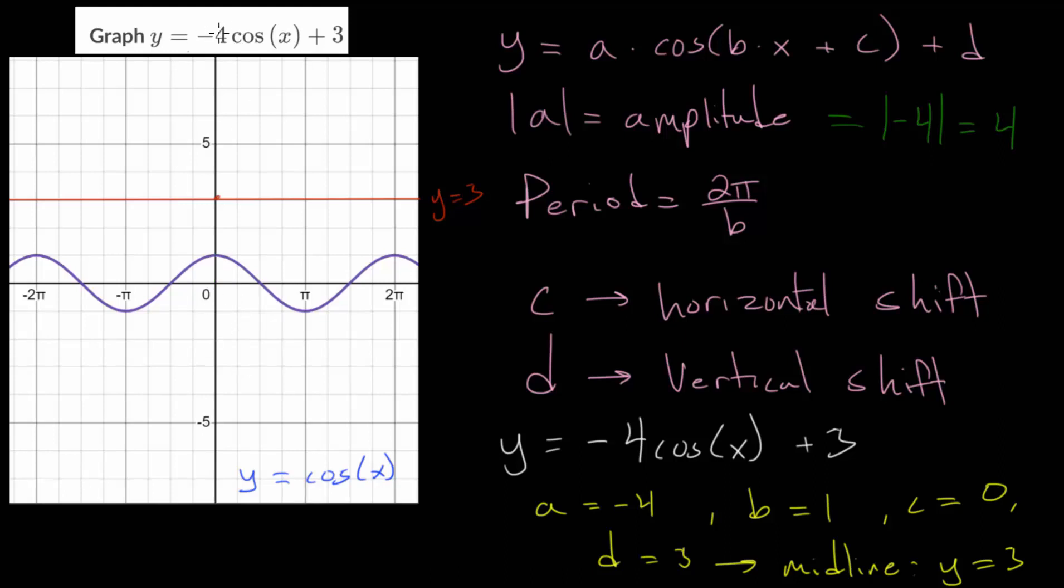This negative in front will cause a reflection. So that might be worth writing down. It will reflect vertically. Essentially, this point will move down here. We'll be on the opposite side of that midline.